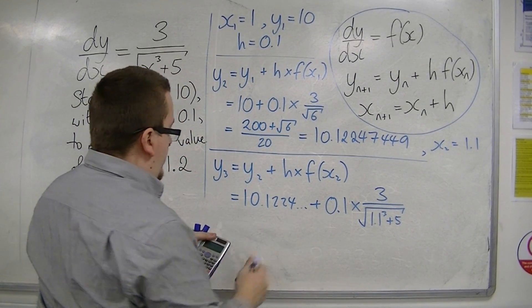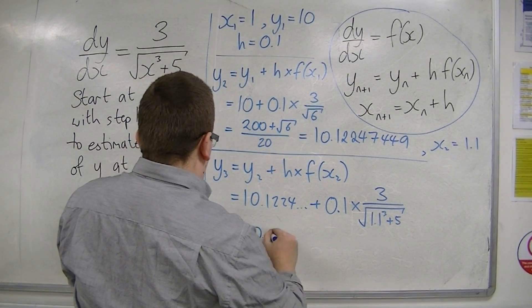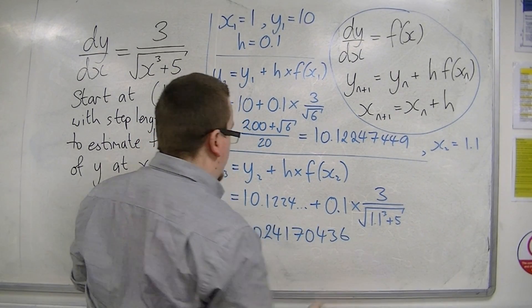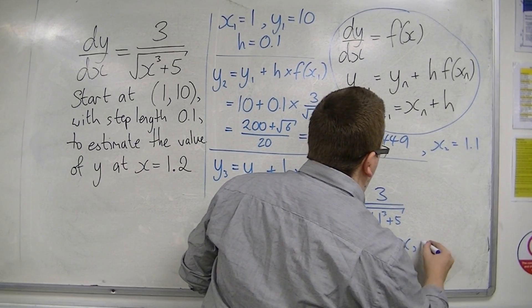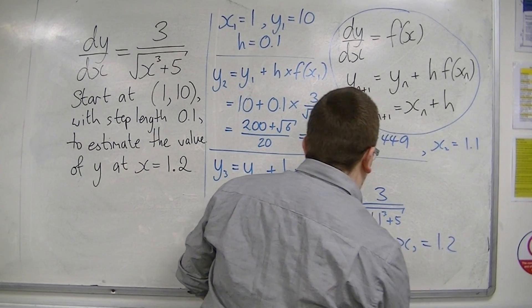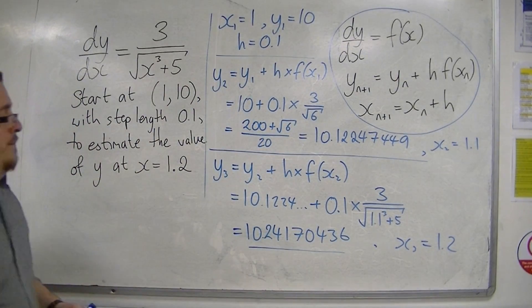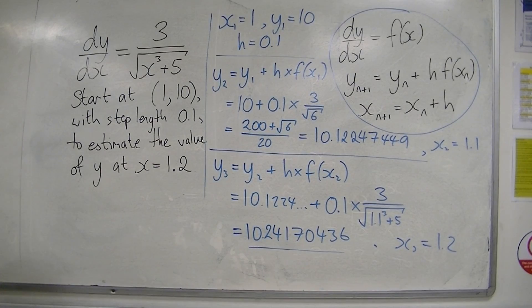And we get 10.24170436. And that will go with x₃ equals 1.2. So that's the y-value that we're looking for when x is equal to 1.2. That's my approximation.